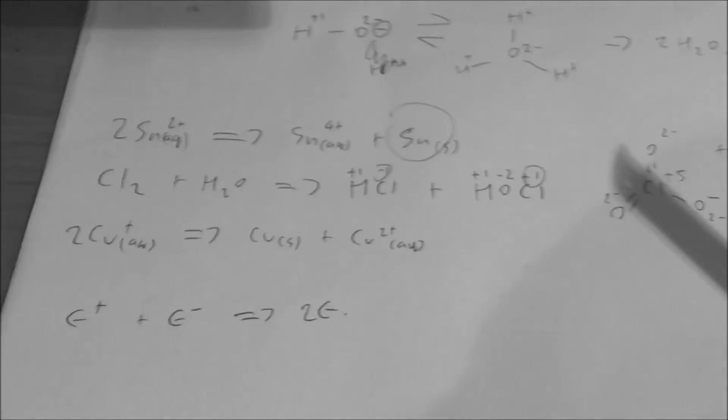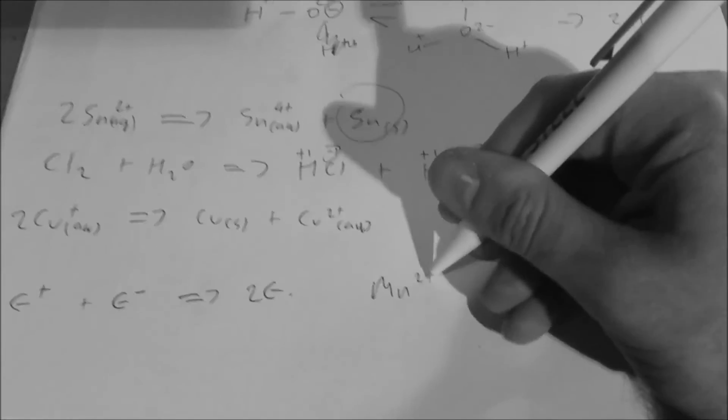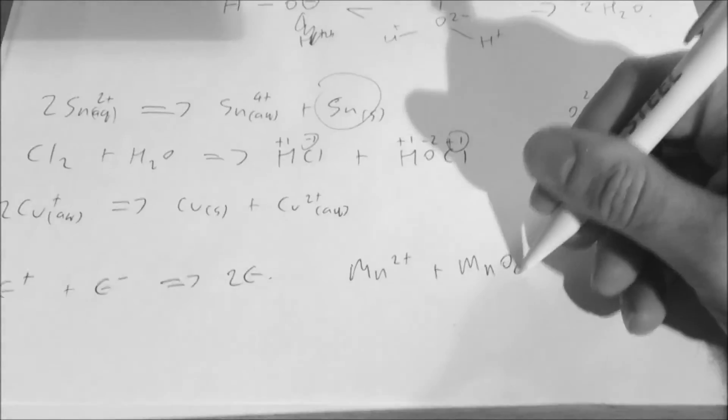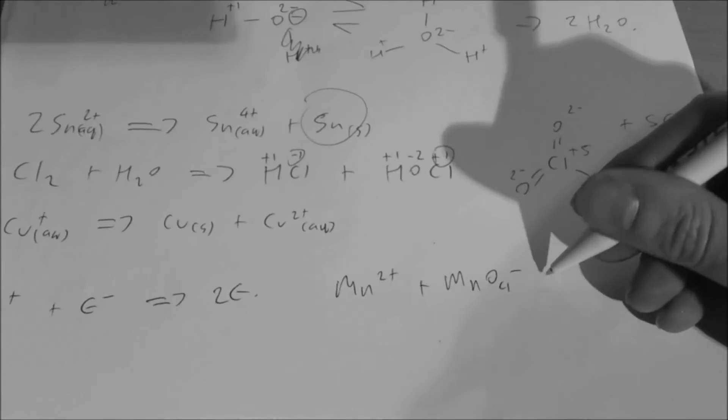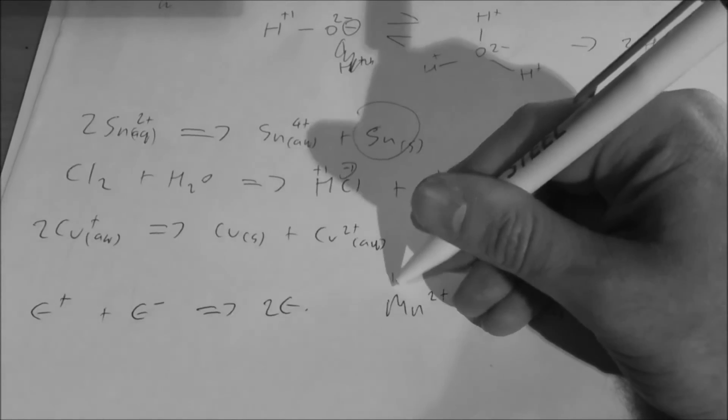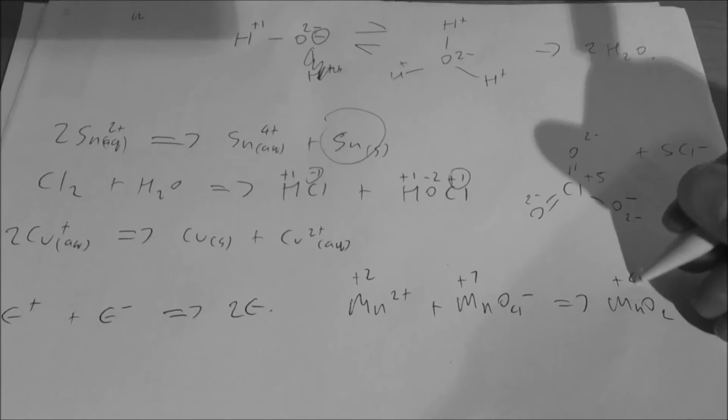Manganese is known for doing this in particular. It's not a particularly stoichiometric reaction, but if you've got Mn2 plus and MnO4 minus, those will react together to give MnO2, so you've got manganese in plus 2 and then plus 7 going to give manganese in the plus 4 oxidation state. So that's the essence of that.